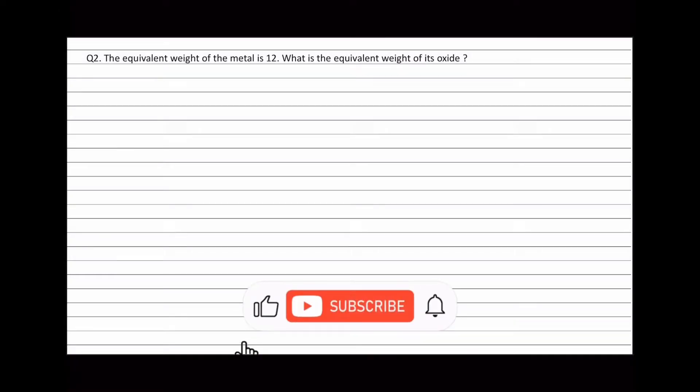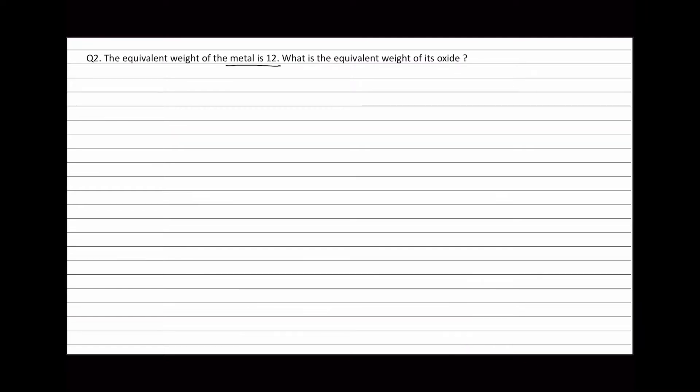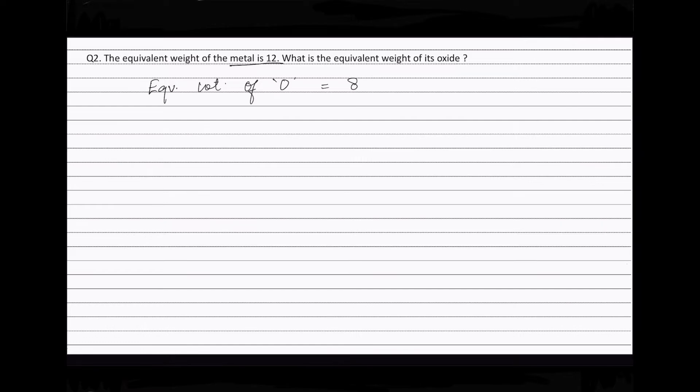Question 2. The equivalent weight of the metal is 12. What is the equivalent weight of its oxide? Equivalent weight of metal is 12, therefore weight of one equivalent of metal is 12. Equivalent weight of oxygen is 8, therefore weight of one equivalent of oxygen is 8.